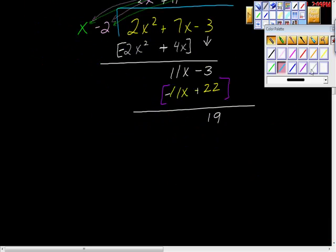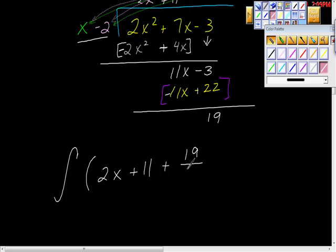So now we can rewrite this integral as the integral of 2x plus 11 plus 19 over x minus 2, the whole thing, dx.